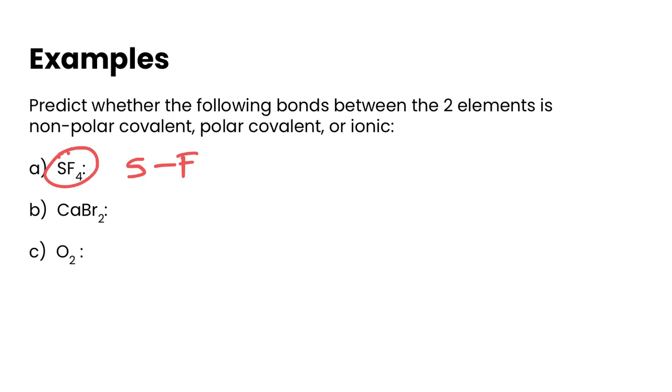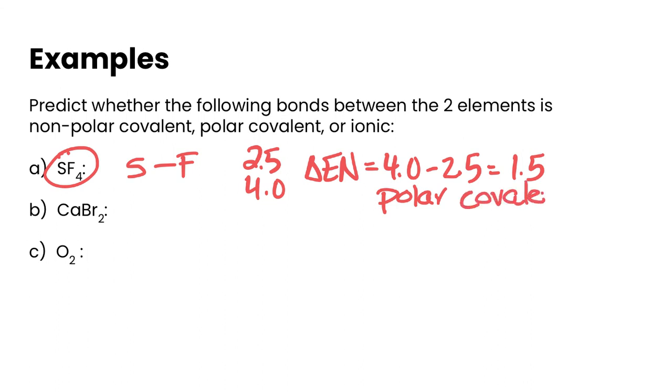So if we look up the values, sulfur is 2.5, fluorine is 4.0. So if we do the difference there, we got 4.0 minus 2.5 gives us 1.5. So that fits in our polar covalent bond area. So that would have a polar covalent bond. And you would have polar covalent bonds between each of the S's and the F's in this molecule.